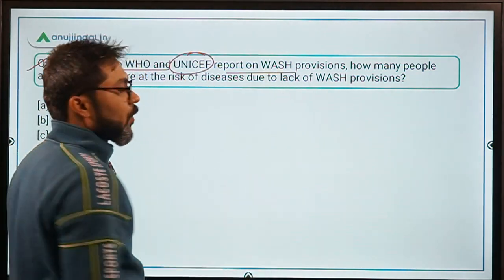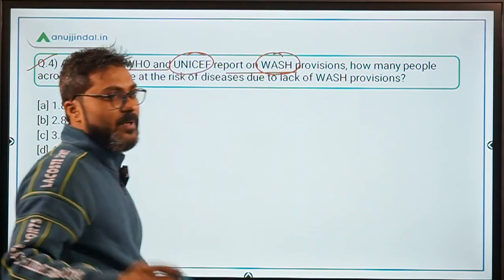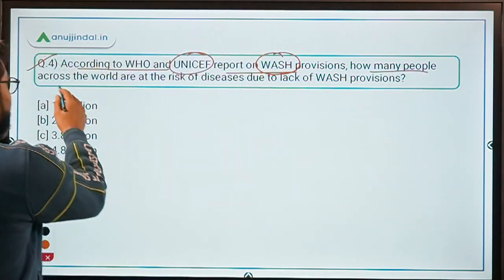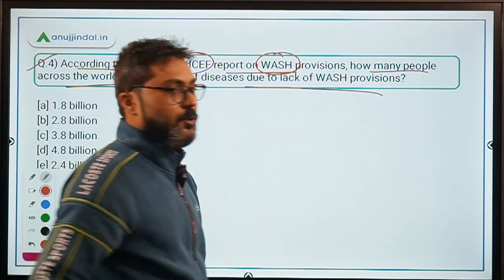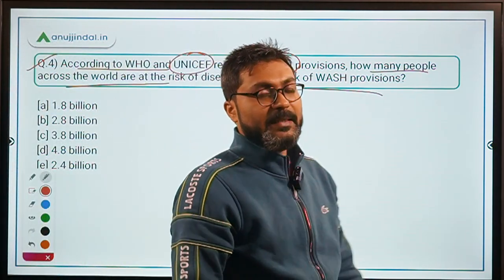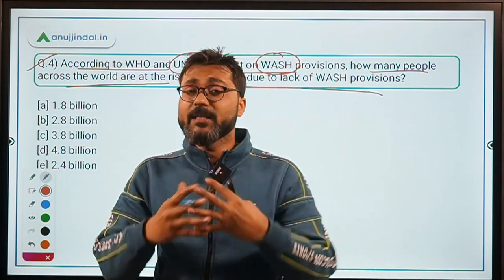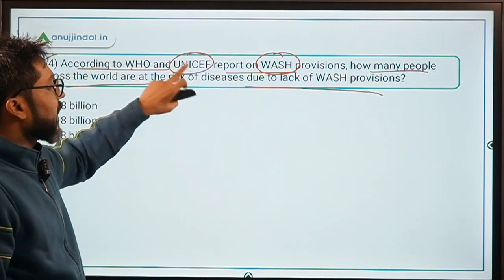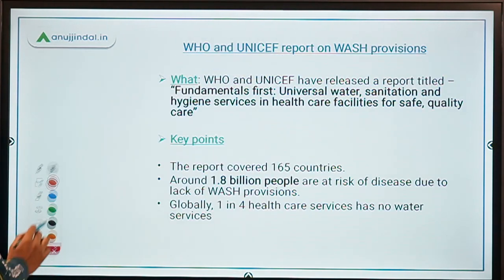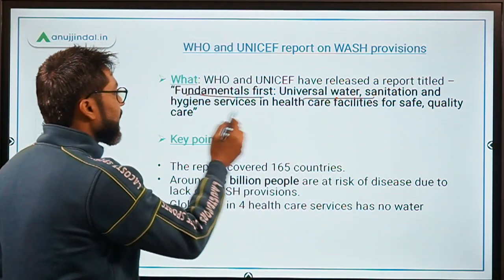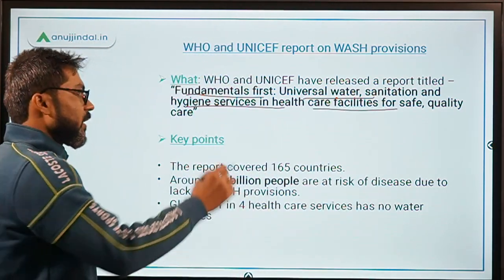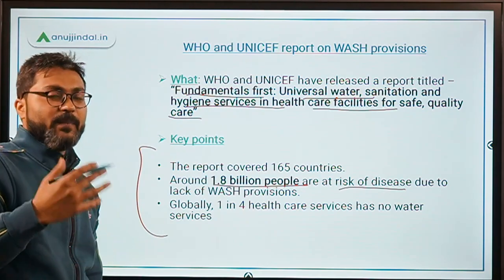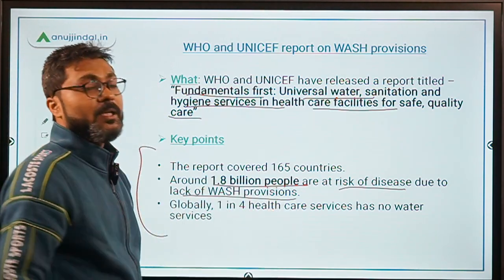Question number 4: according to the WHO-UNICEF report on WASH provisions, how many people across the world are at risk of diseases due to lack of WASH provisions? WASH stands for Water, Sanitation and Hygiene — hygiene has received a lot of attention after COVID-19. This report has been launched by WHO and UNICEF, with the title 'Fundamentals First: Universal Water, Sanitation and Hygiene Services in Healthcare Facilities for Safe Quality Care.' According to this report, 1.8 billion people are at risk of COVID-19 or other diseases due to lack of WASH provisions.